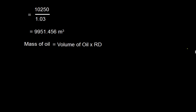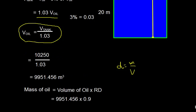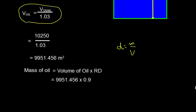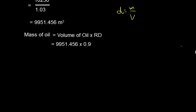Now let us find the mass of the oil. Mass of oil = volume of oil × RD, since density equals mass over volume, so mass equals volume times density. The RD is 0.9, so after multiplying we get 8956.3 tons.